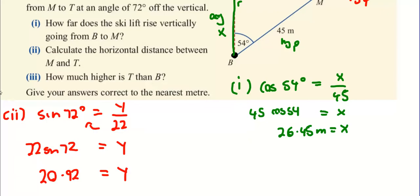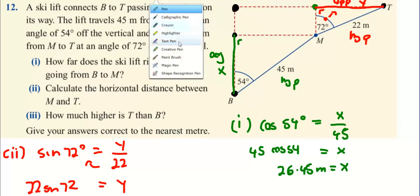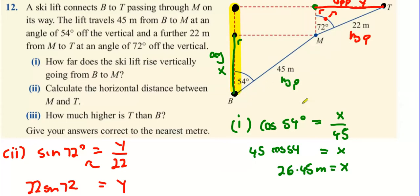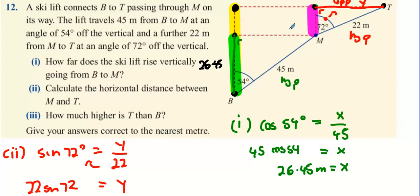How much higher is T than B? I need to get the vertical height. If I transfer T horizontally, I have to find this yellow length here. If I can find this pink line here, I can add it to the green answer from part one, which was 26.45. The pink part is the adjacent — the only part I'm missing.